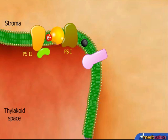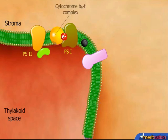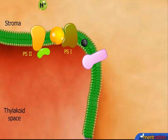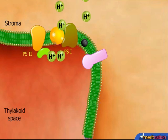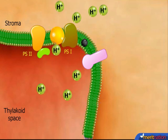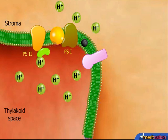As the electrons move through the photosystems via the cytochrome B6F complex, the B6F complex pumps protons from the stroma into the thylakoid space. This creates a proton gradient across the thylakoid membrane.